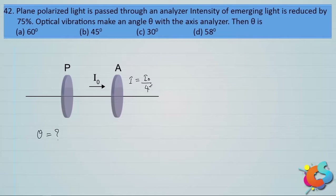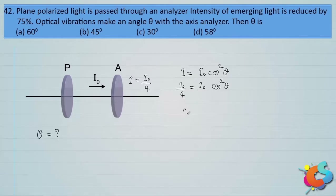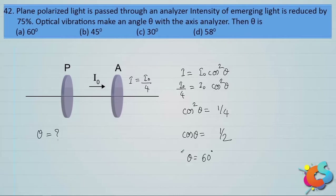Using Malus's law: I = I₀ · cos²θ. The emergent intensity is equal to incident intensity times cos²θ. So I₀/4 = I₀ · cos²θ. Cancelling I₀, cos²θ = 1/4, so cos θ = 1/2, therefore θ = 60°. Option A is the correct answer.